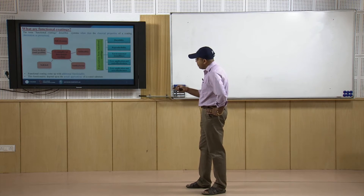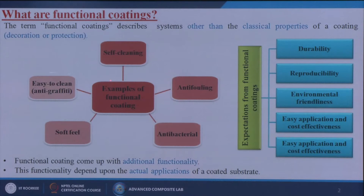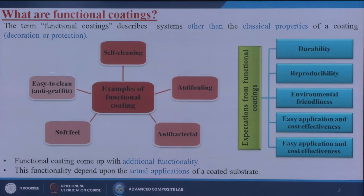There are several types of functional coatings available by which we can change material properties: easy to clean, anti-graffiti properties, self-cleaning, anti-fouling properties, antibacterial applications, and soft feel. All these types of coatings will be covered in our future slides and lectures.